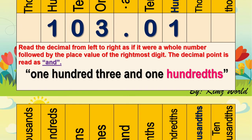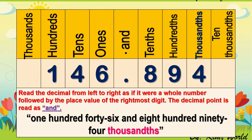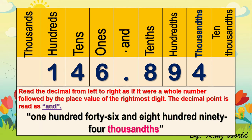Next number, read it from left to right: 146. Read the point as 'and,' 894. Add the place value of the last digit on the right. So we read it as 146 and 894 thousandths.